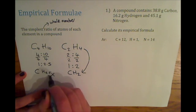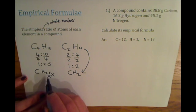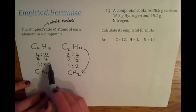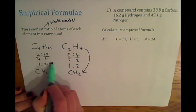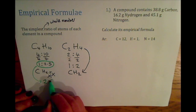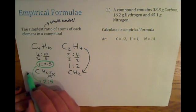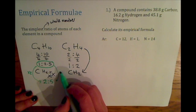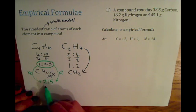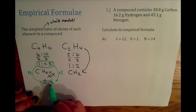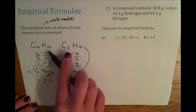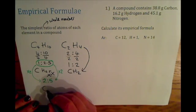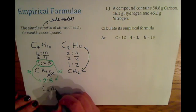What we can do is double both sides: doubling 1 to 2.5 gives us C2H5, a ratio of 2 carbon atoms to 5 hydrogen atoms. So the empirical formula for C4H10 is C2H5.